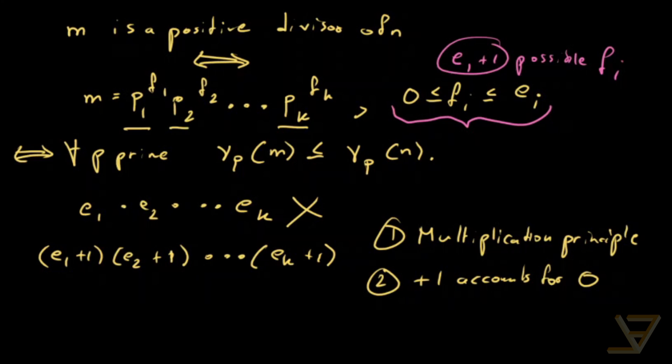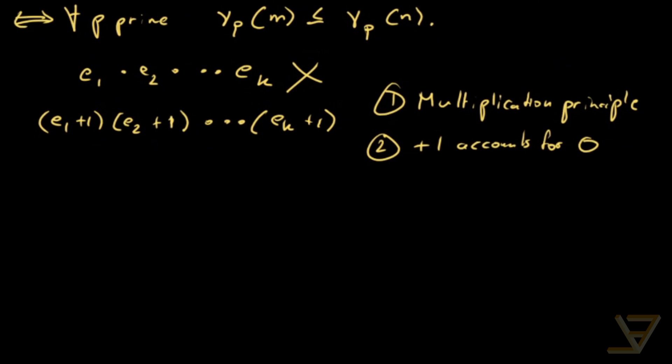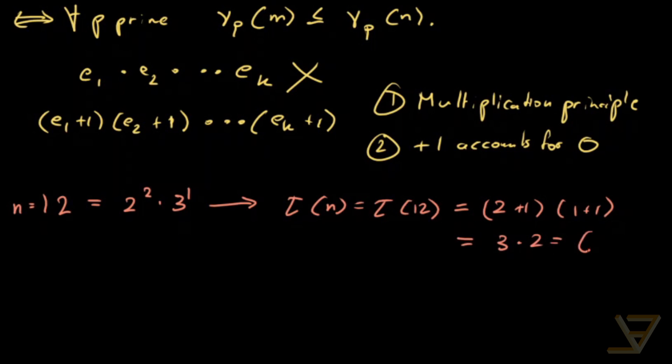So let's do an example before we end. Let's say we have the integer 12. So n equals 12. 12 is equal to 2 squared times 3. So tau of n, which is tau of 12, is equal to 2 plus 1. And there's a 3 to the 1 here, so it's 1 plus 1. And that is equal to 3 times 2, which is 6.